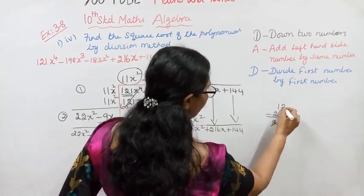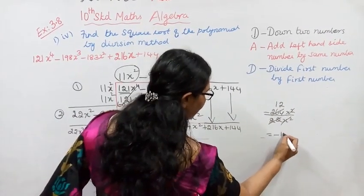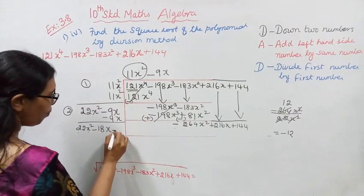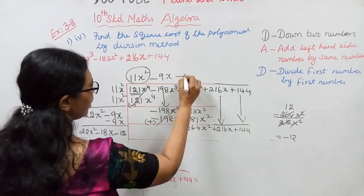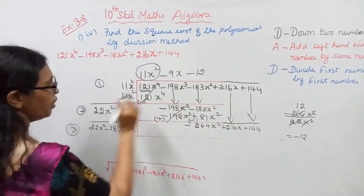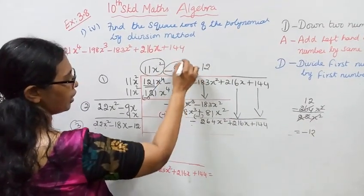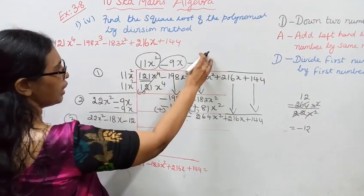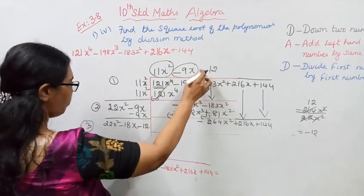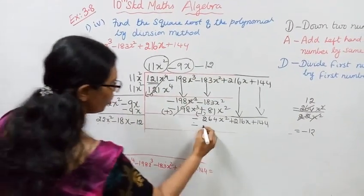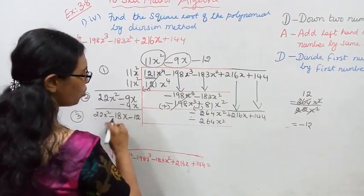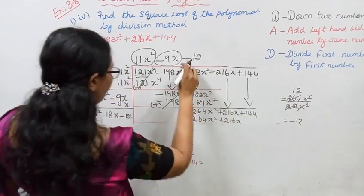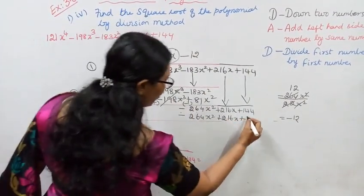-264x². This is the third. The third step follows. Minus 12 times 22 is -264x². Minus into minus is plus. 12 into 18 is 216x. Minus into minus is plus. 12 times 12 is 144.